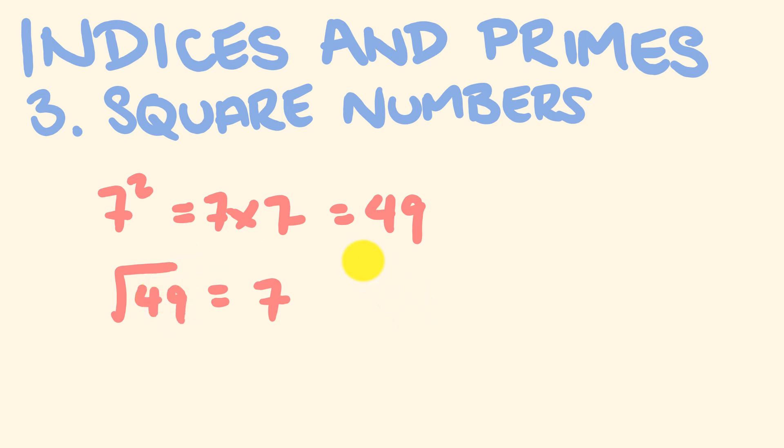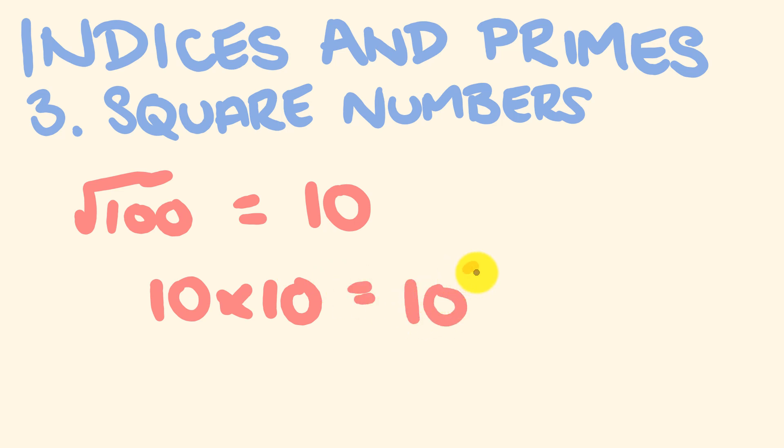I'll give you another example. What is the square root of 100? What number do you multiply by itself to get 100? The answer is 10, because 10 times 10 equals 100. And we could write 10 times 10 as 10 squared equals 100. So hopefully you got that.